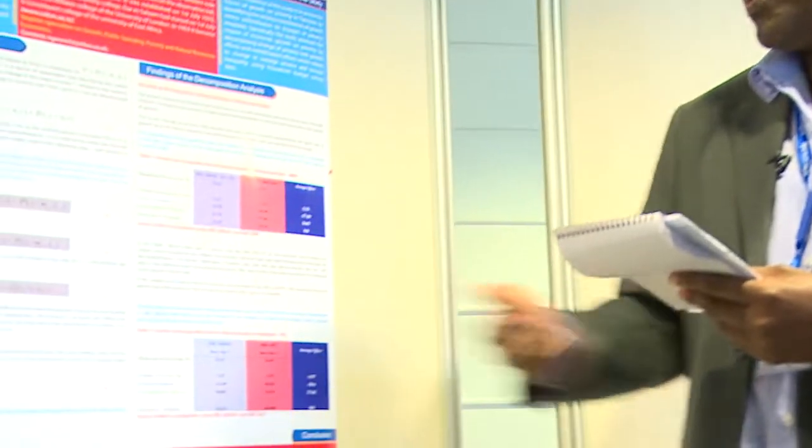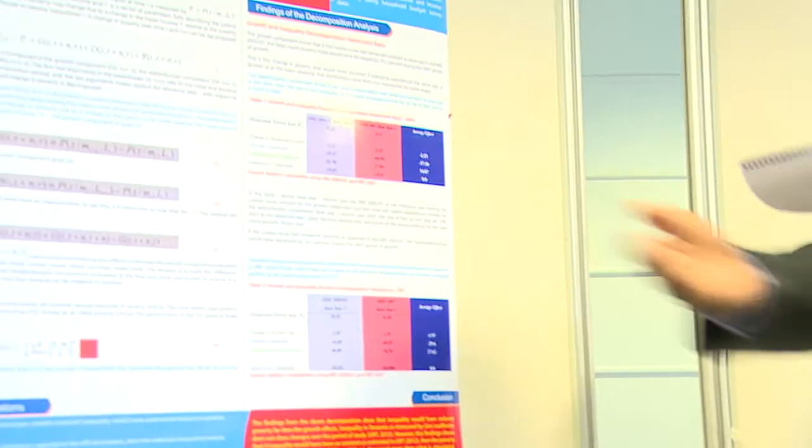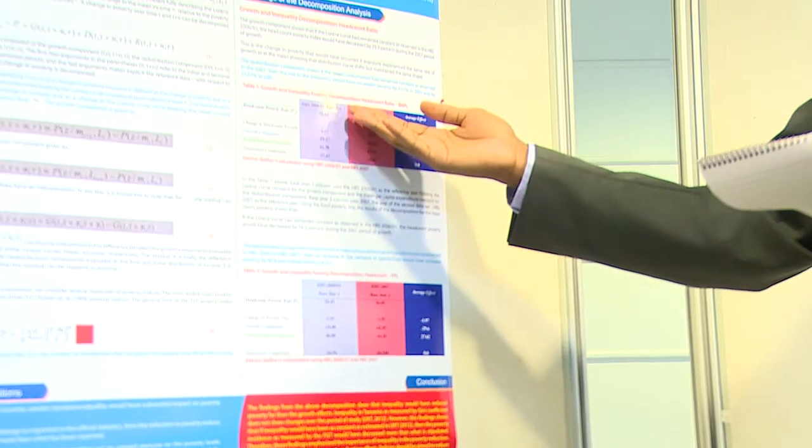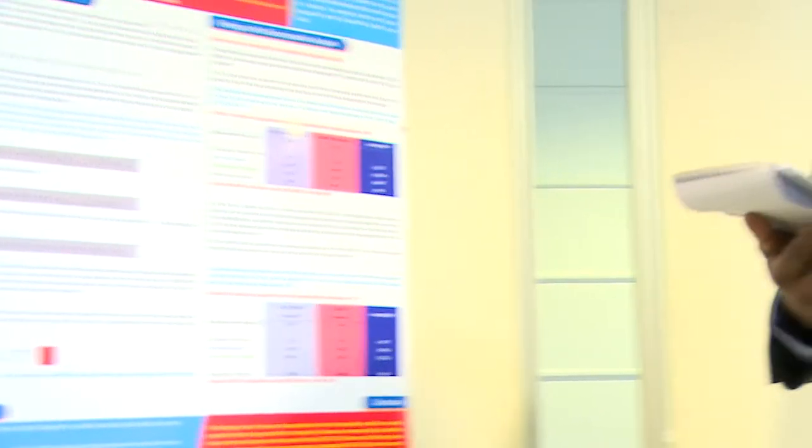Asking the reverse question — if only the distribution of income had changed while mean income remained constant — we find that poverty would have increased by 42.7% for the base year HBS 2000-2001, and would have increased by 27.04% if using HBS 2007 as the base year.